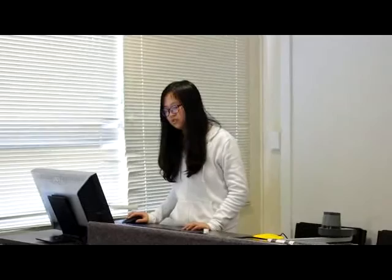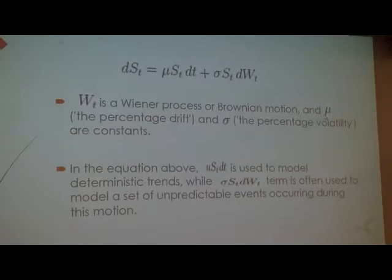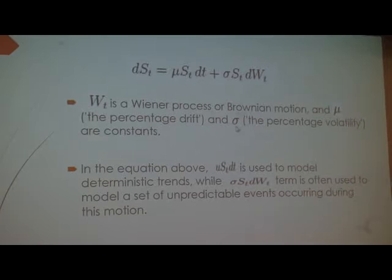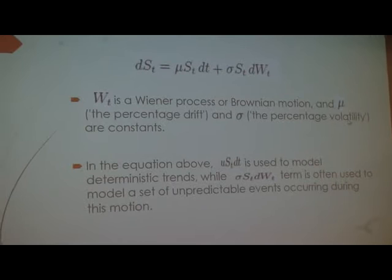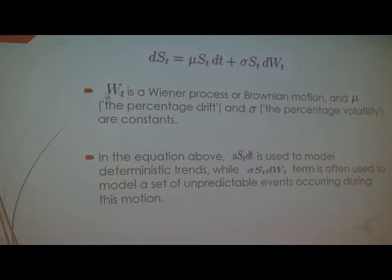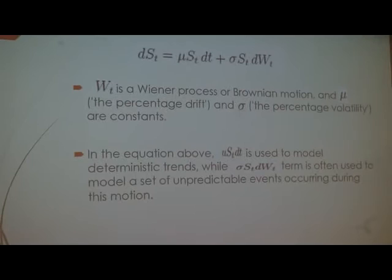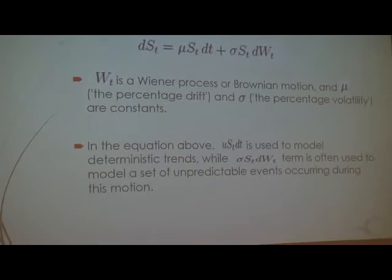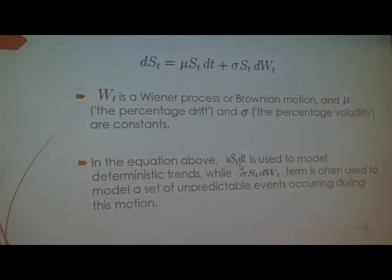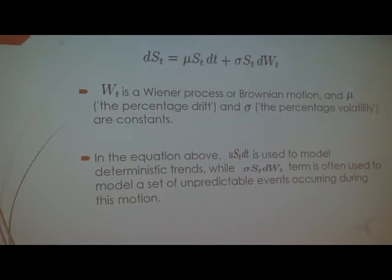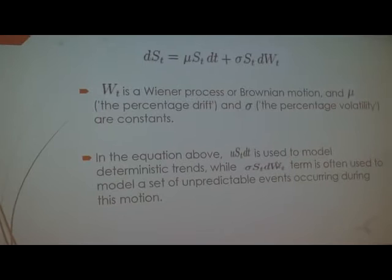We say S(t) follows geometric Brownian motion when it meets this equation. The first term is defined as percentage drift, and the second term is defined as percentage volatility. This part is a linear process of Brownian motion, and both the percentage drift and the percentage volatility are constants. The drift term is used to model deterministic trends, while the volatility term is often used to model a set of unpredictable events occurring during this motion.